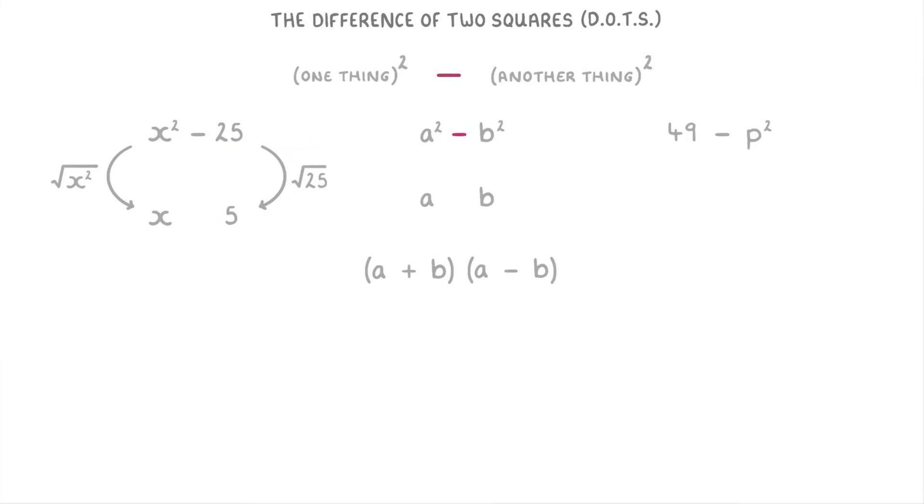Then all we have to do is put these numbers into two sets of brackets, one where we add them together so x plus five, and one where we subtract them so x minus five.